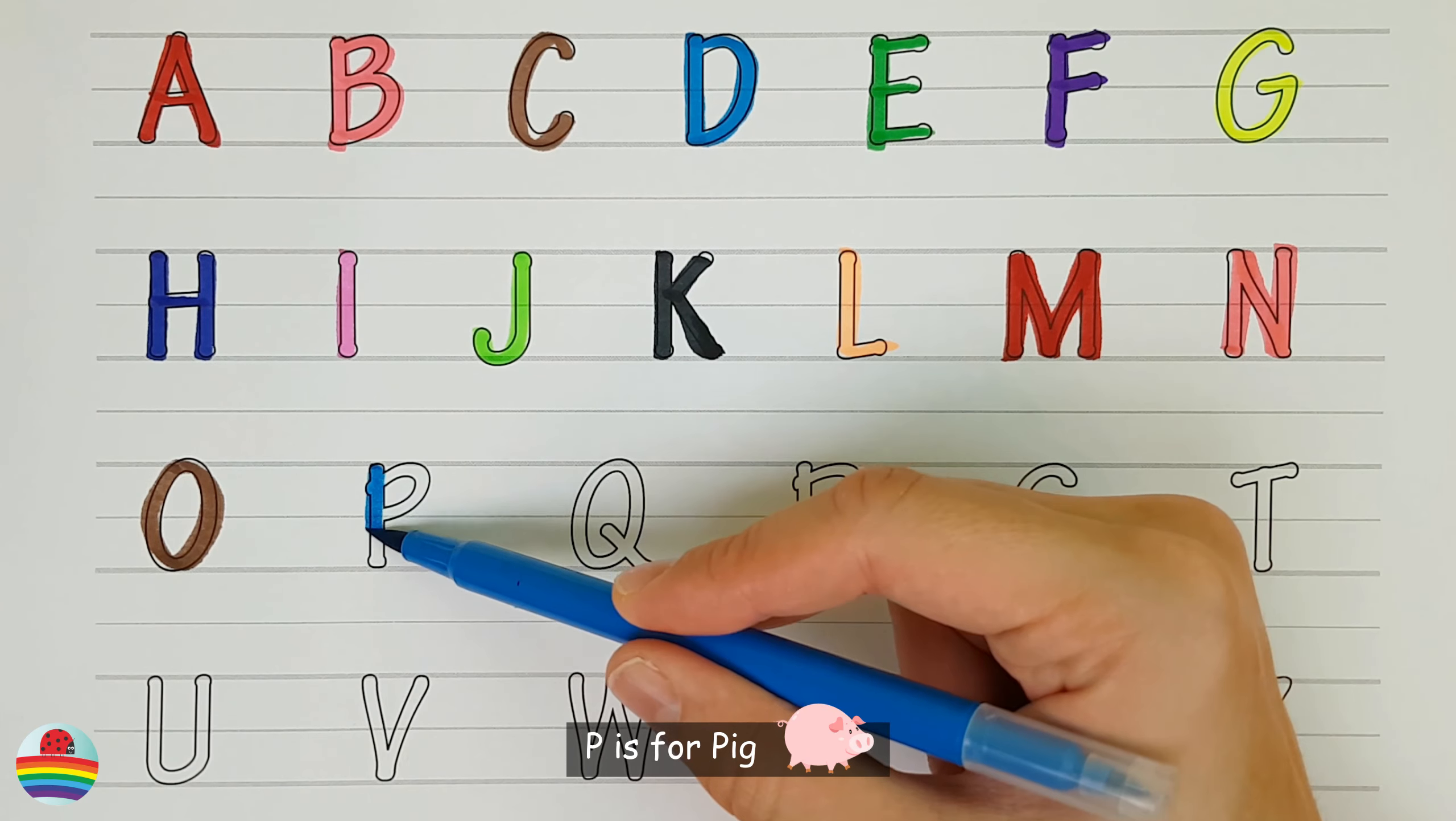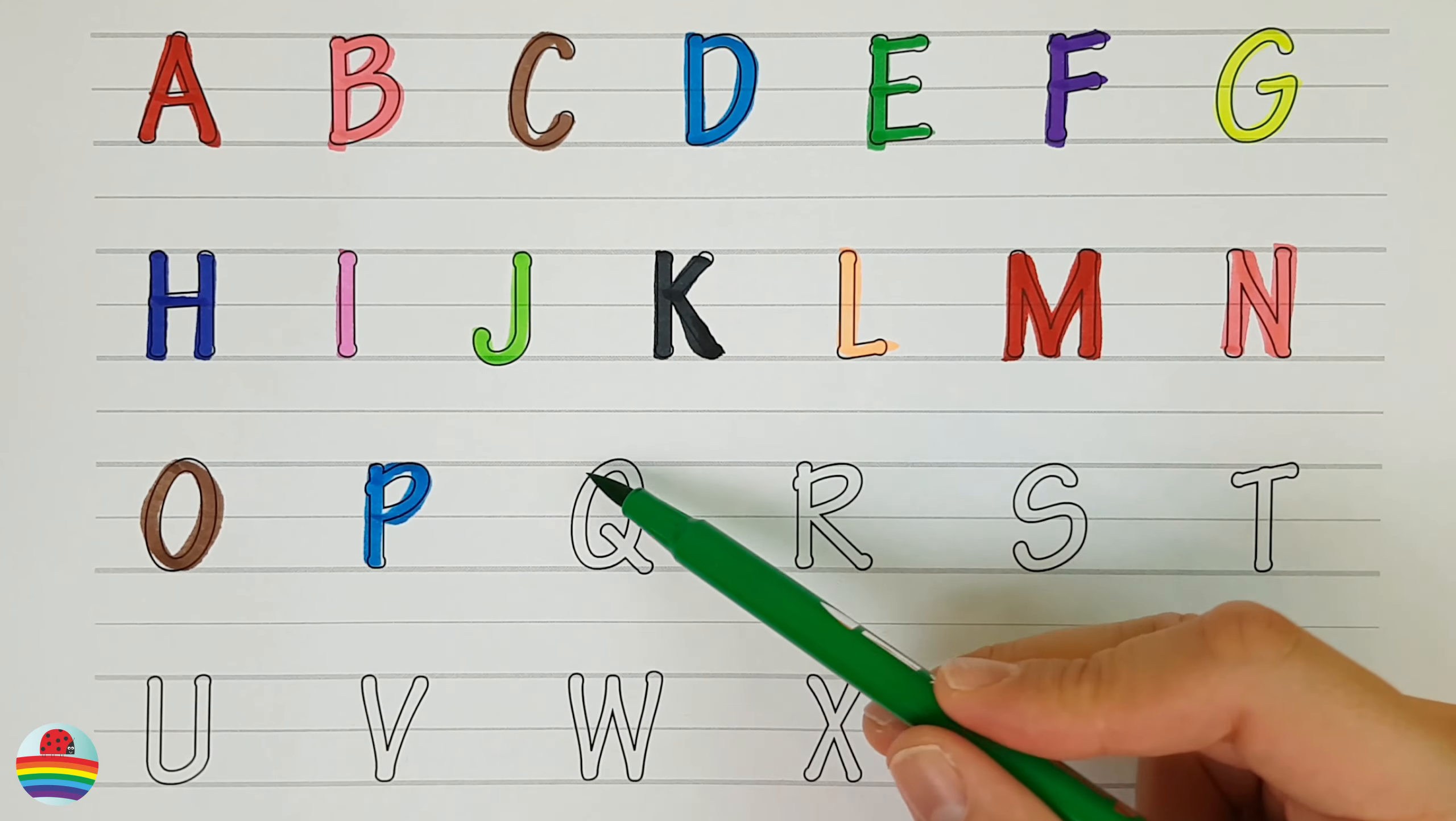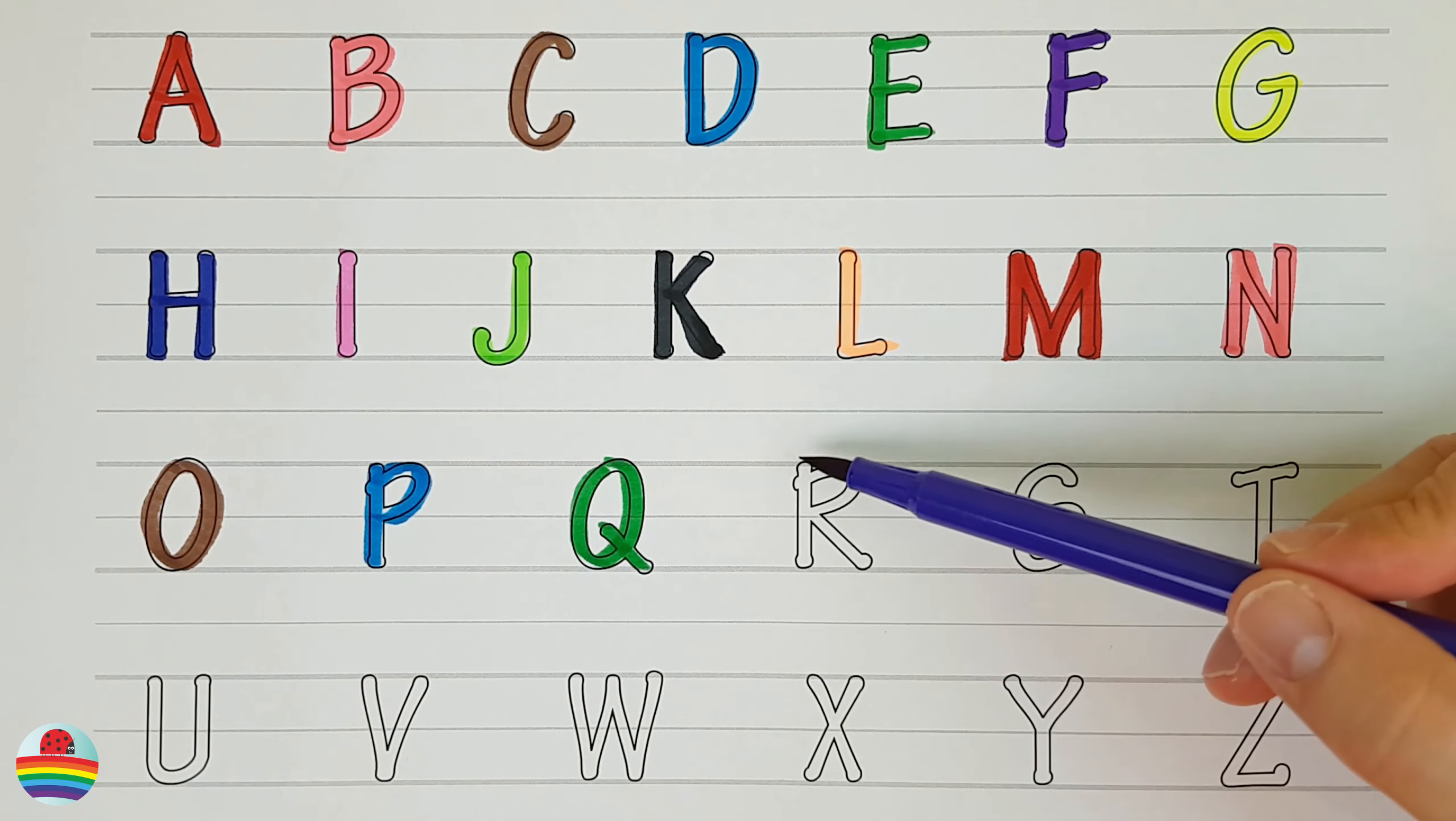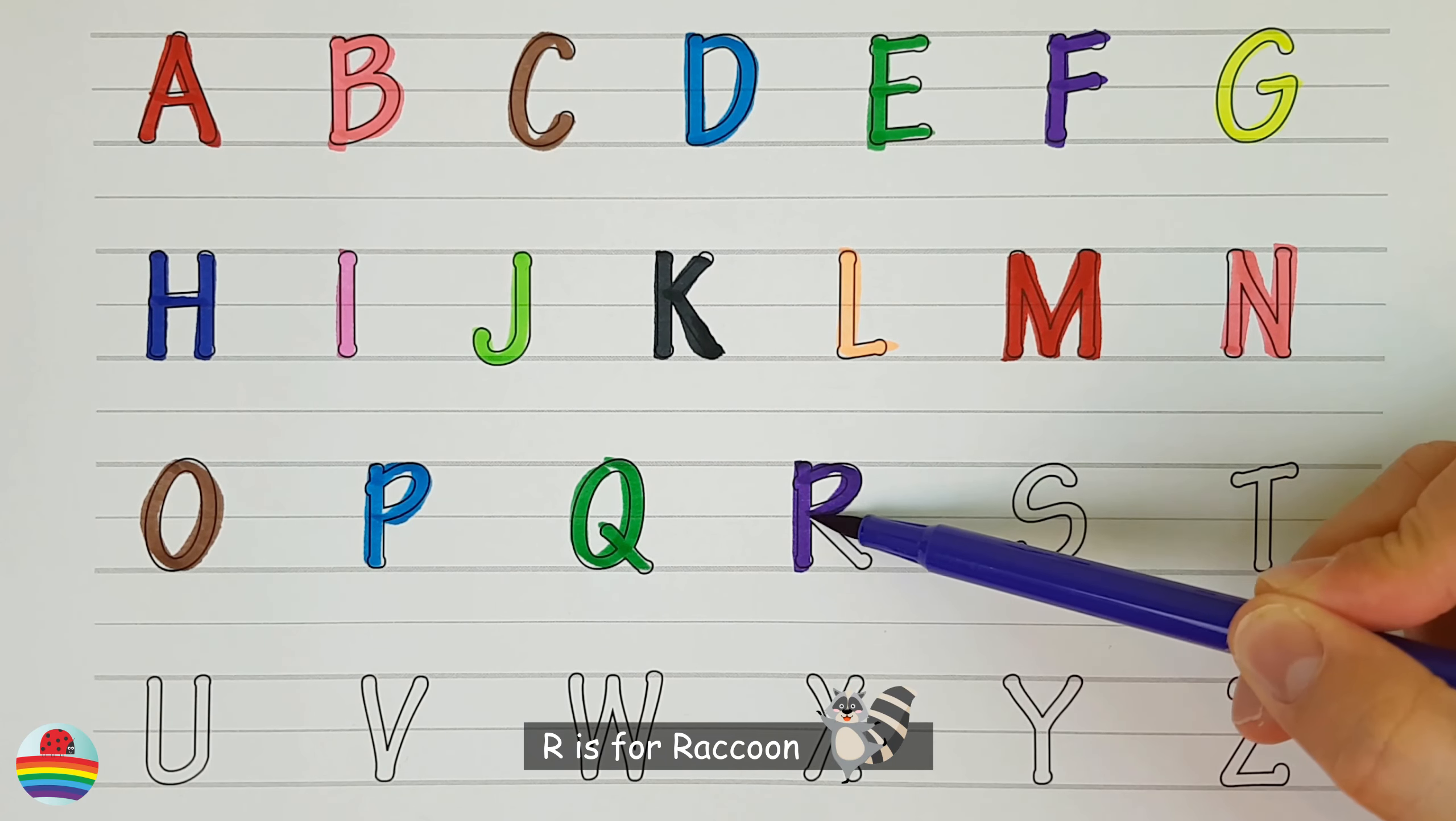P. P is for pig. P. Q. Q is for quail. Q. R. R is for raccoon. R.